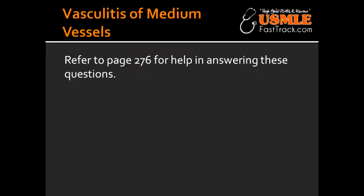What is the pathological characteristic of Buerger's disease? The pathological characteristic is that it is known as segmental thrombosing vasculitis. The treatment for Buerger's disease is to stop smoking.